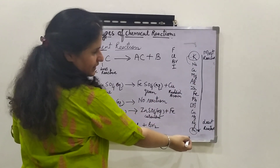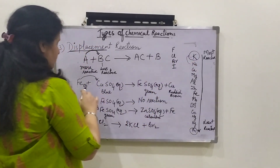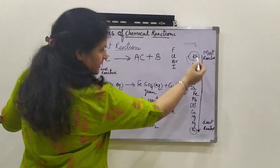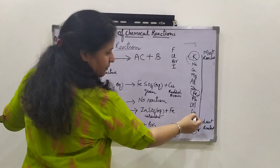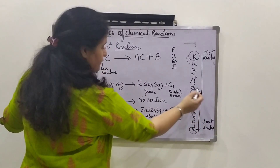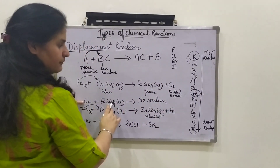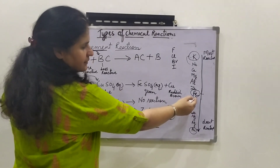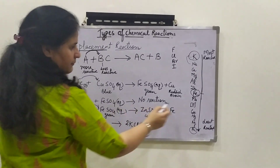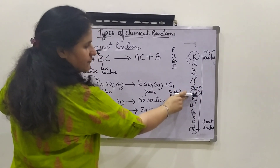Calcium can take the place of all elements below it, but cannot take the place of sodium and potassium. Iron was able to take the place of copper because in this series iron is above copper — iron is more reactive than copper. Copper was not able to take the place of iron because copper is less reactive than iron. Zinc was able to take the place of iron because zinc is above iron in the series, so zinc is more reactive and can take the place of iron.